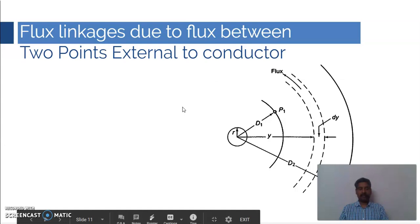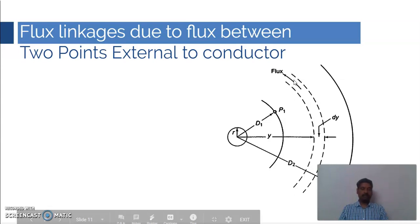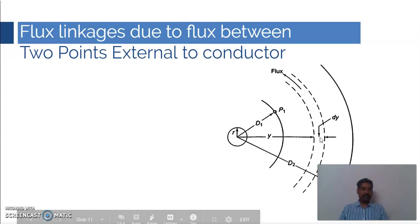Since all the flux lines are circular in shape, we will calculate the flux linkage with this conductor existing between P1 and P2. To calculate the flux linkages we will follow the same procedure, considering a small infinitesimal tubular column with radius y and thickness dy. This is the tubular column we are considering, and the flux exists within this distance.